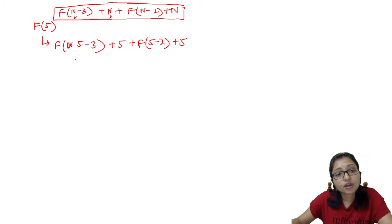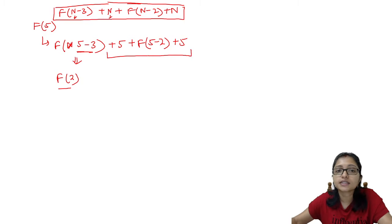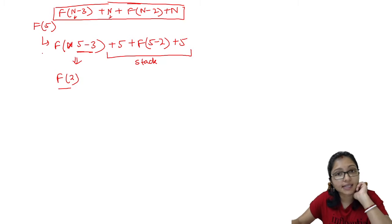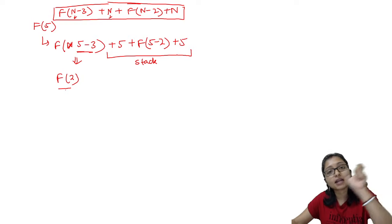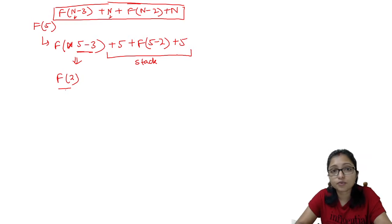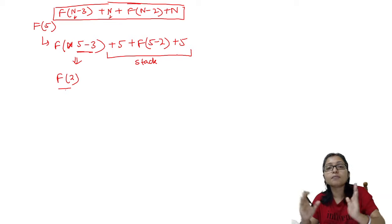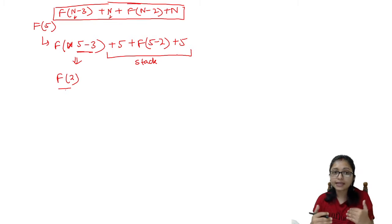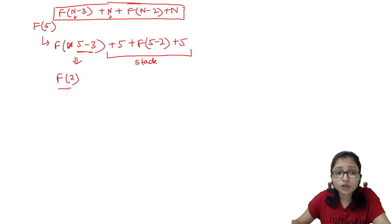Then it will try to evaluate f(5-3), which means f(2). Now when it is calling f(2), there is a recursion. The remaining part — that is '+ 5 + f(5-2) + 5' — will be put in the stack. That is the main concept of recursion: whenever you call a function recursively, the remaining part goes into the stack, and when we get the return value, that stack will be evaluated.